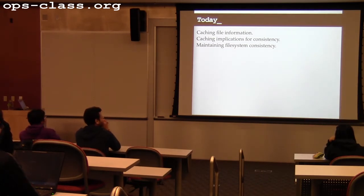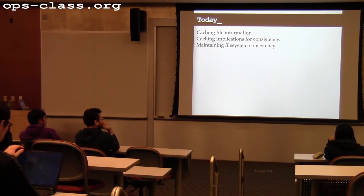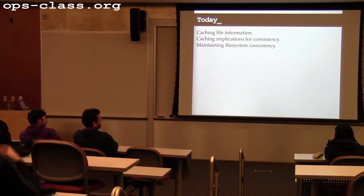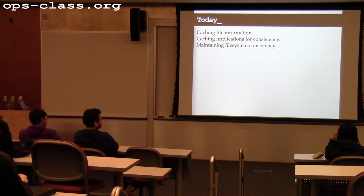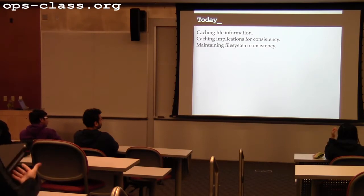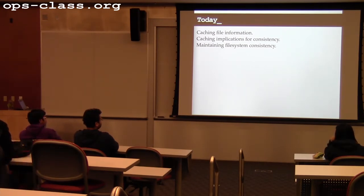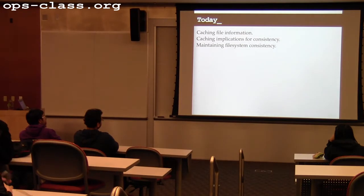Today we're going to keep talking about file systems. In particular, when we start talking about caching and consistency, I think we get to some of the parts about file systems that are pretty interesting, and some parts where there's been continued work and research over the last 10 or 20 years. So we're going to start today talking about how we make file systems fast — how we use memory not only as memory, but also as a cache for the file system.